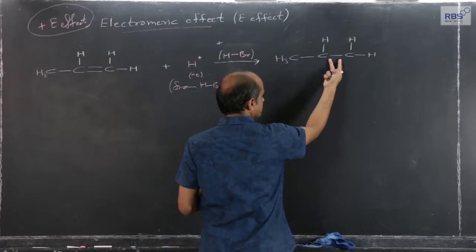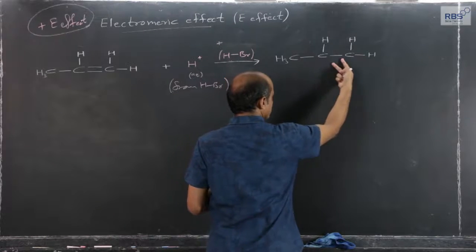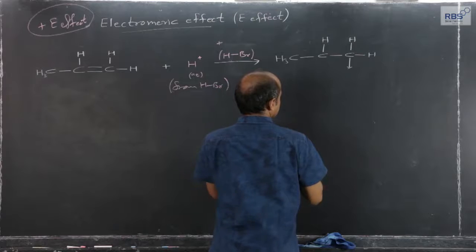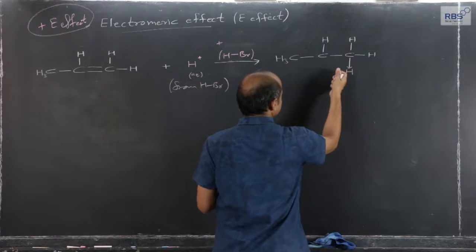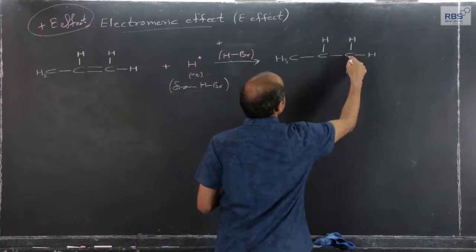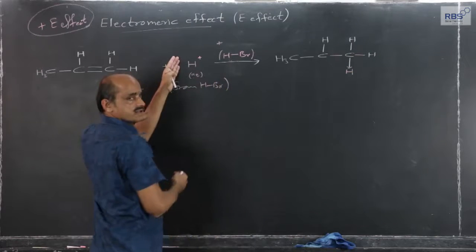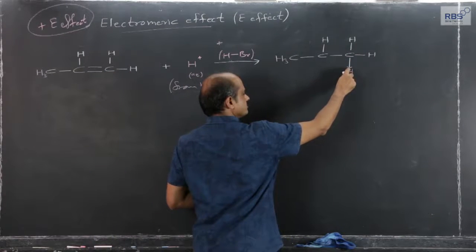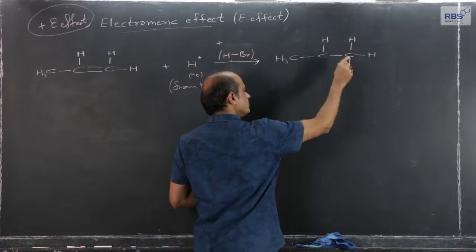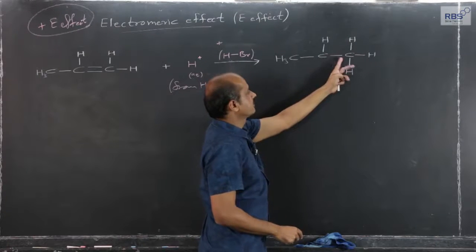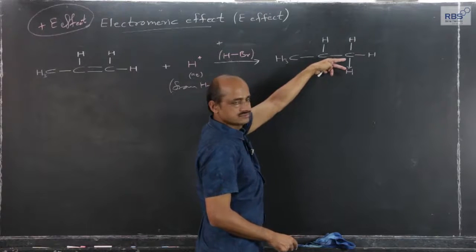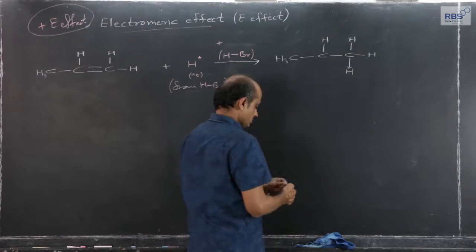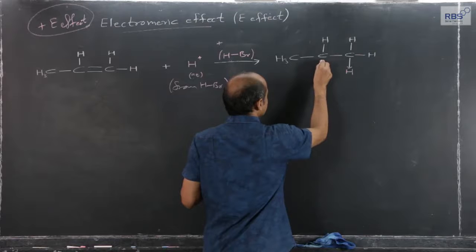The second bond in the double bond — the weakly shared pi bond — will get transferred to this carbon. The electron pair which was shared between these two carbon atoms is now here. The positively charged H+ ion will now be shared between carbon and H+, forming a covalent bond. The arrow indicates that the entire electron pair was between these two carbons and is now here. Hydrogen has entered as H+ with an empty orbital, so a positive charge is developed on this carbon.